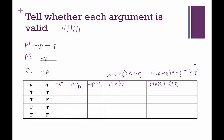Now let's fill this in. P and Q are already filled in. Not P has the opposite truth value of P: false, false, true, true. Not Q is the opposite of Q: false, true, false, true. For this column, not P then Q — this is a conditional. We need either the hypothesis to be false or the conclusion to be true. Since the first two rows have a false hypothesis, those are true conditionals. For the last two, true then true is true, and true then false is false.